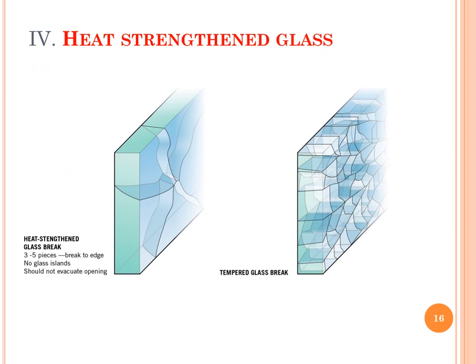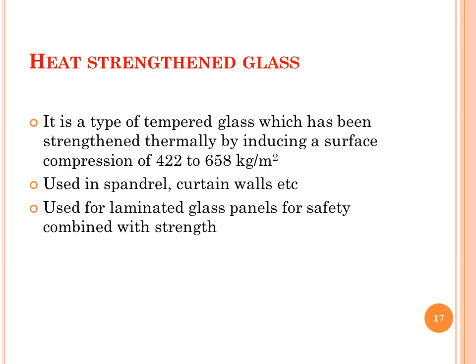The next type of architectural glass is heat strengthened glass. The figure shows the breaking pattern of heat strengthened glass as compared to tempered glass. Heat strengthened glass breaks into only three to five pieces whereas tempered glass gets shattered. It is a type of thermally strengthened glass with a surface compression of 422 to 658 kg per meter square. It is used in spandrel, curtain walls, etc., and for laminated glass panels combining safety with strength.